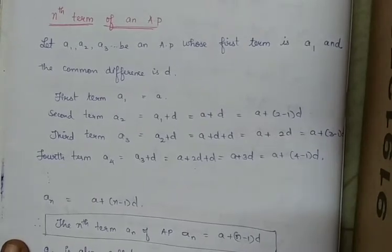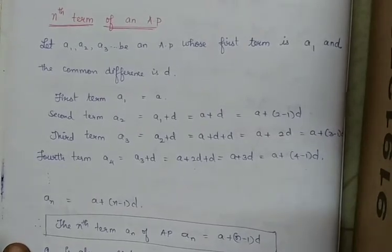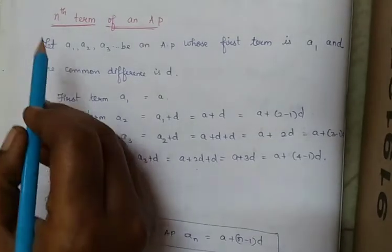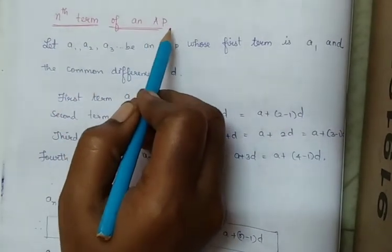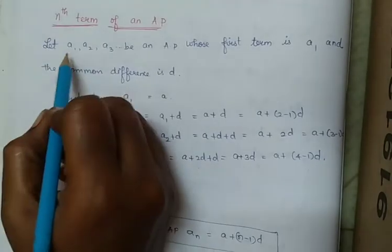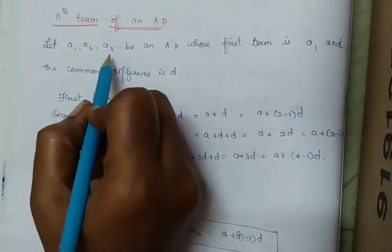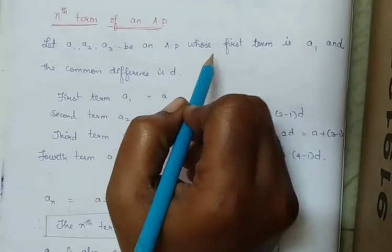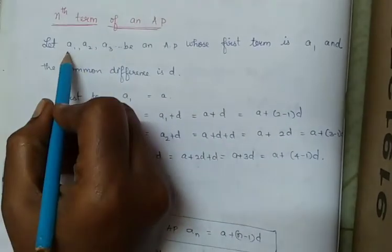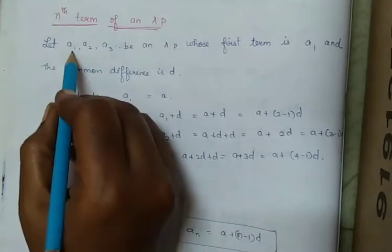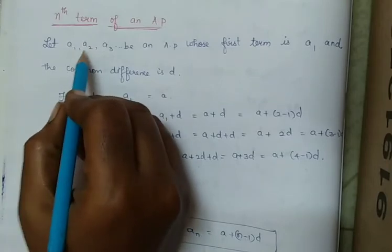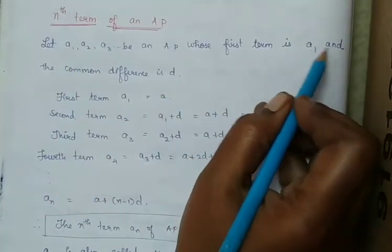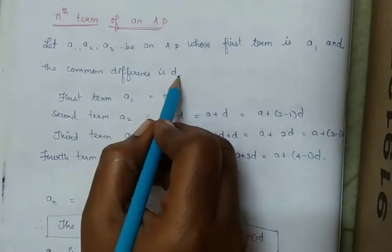Good morning. Today we are going to discuss the next topic in Chapter 5: Arithmetic Progression — the Nth term of an Arithmetic Progression. Let A1, A2, A3, and so on be an AP, that is an Arithmetic Progression. In this, the first term will be A1 and the difference between the first two terms will be D. So the first term is A1 and the common difference is D.